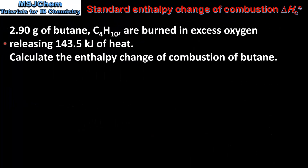In the next example we look at a different method of calculating the enthalpy change of combustion. 2.90 grams of butane, which is C4H10, are burned in excess oxygen releasing 143.5 kilojoules of heat. Using this data, calculate the enthalpy change of combustion of butane.